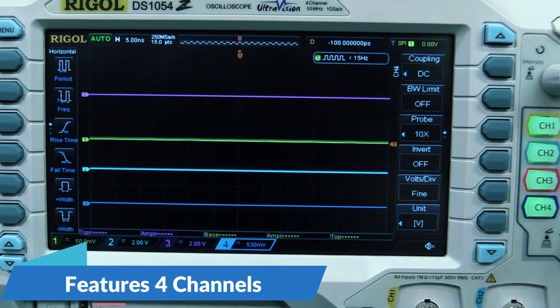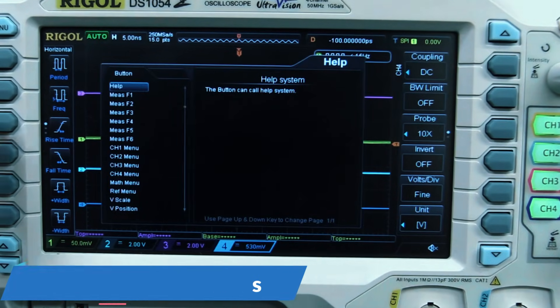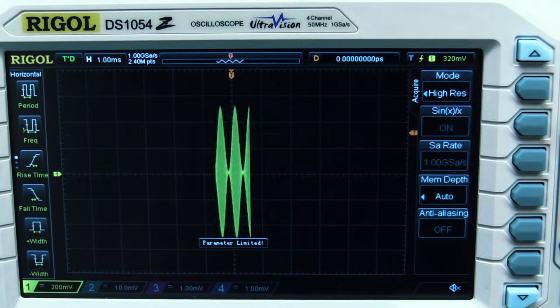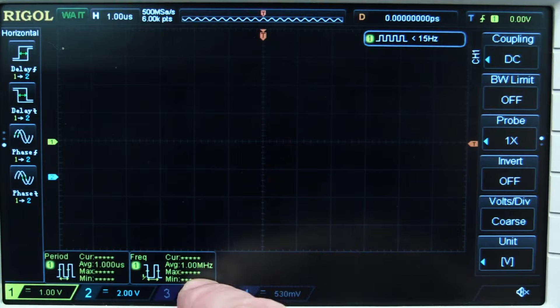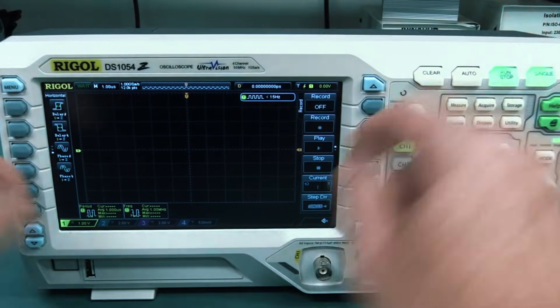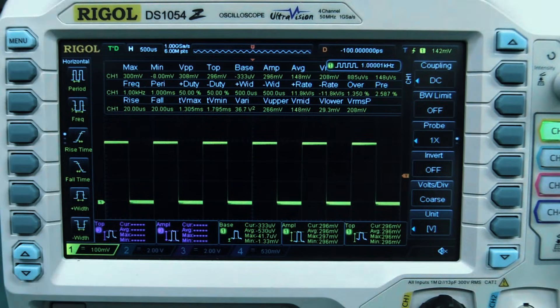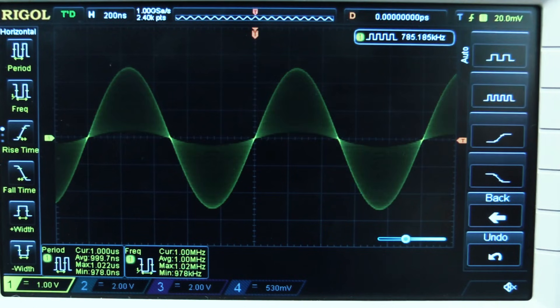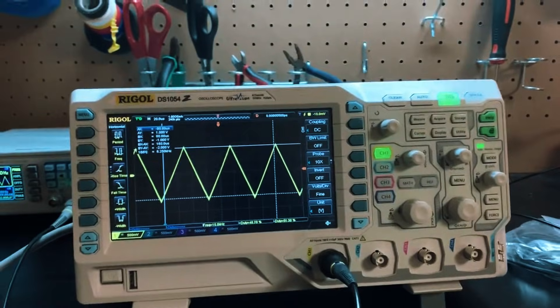It features four channels, allowing users to analyze multiple signals simultaneously, making it an excellent tool for embedded system development, circuit debugging, and general electronics work. The UltraVision technology provides deep memory capture, ensuring that you don't miss fine waveform details. Combined with a real-time sampling rate of 1 giga samples per second, this scope delivers fast and accurate signal analysis.